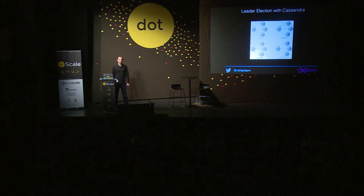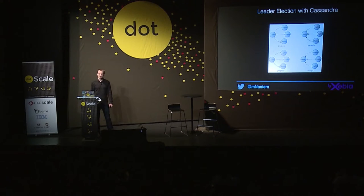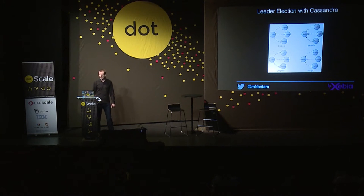Today I'm going to talk about leader election with Cassandra. Since version 2, Cassandra offers a new mechanism called Lightweight transactions. It's based on Paxos, a consensus protocol that allows a distributed system to agree on proposals with a quorum-based algorithm, with no masters required and without the problems of two-phase commit.